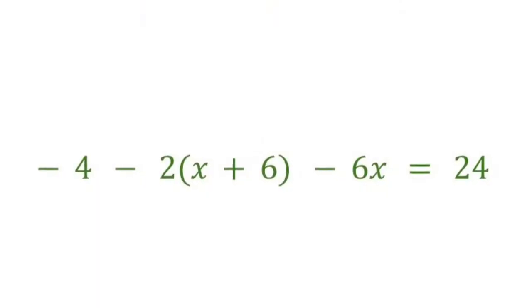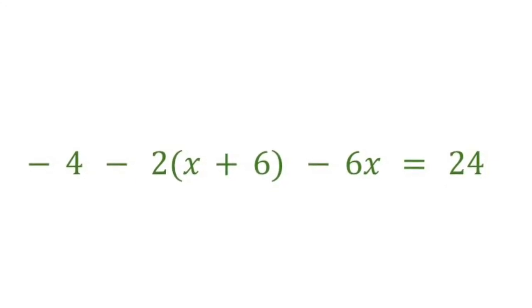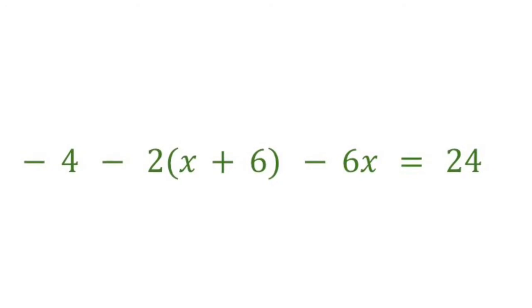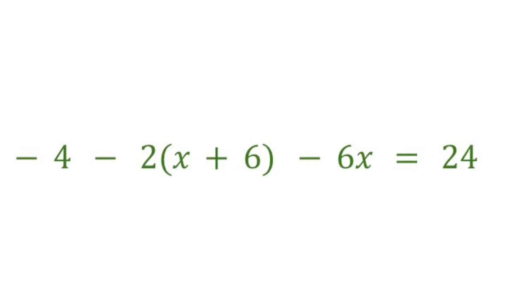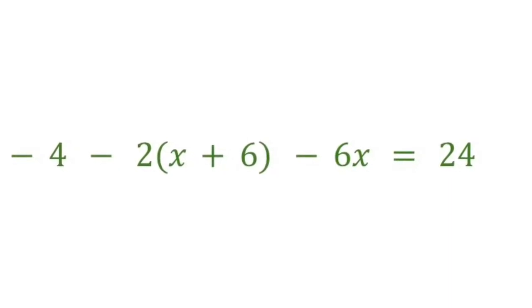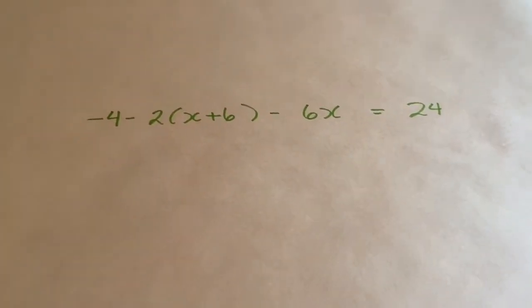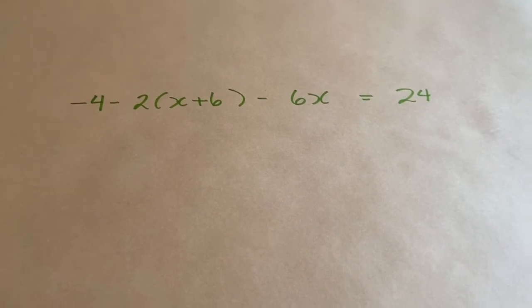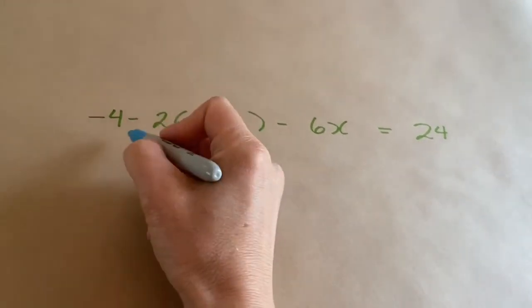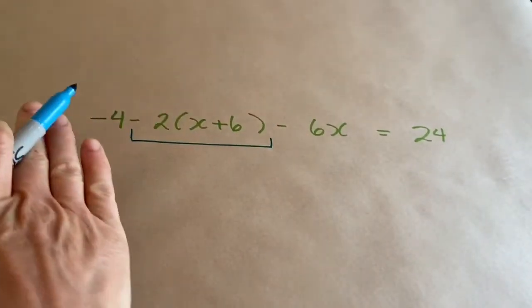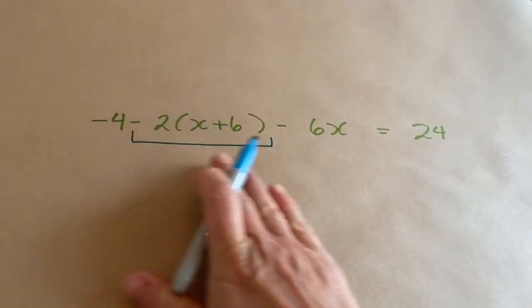I realized that our video today is already getting long, but I want to do one more question with you so that you've seen all the different sorts of examples you might run into. So let's try this last question together and then I'll leave you with some homework. The first thing we want to do is deal with the brackets. Let's ignore the minus 4 at the beginning and the minus 6x equals 24. Let's just worry about this part.